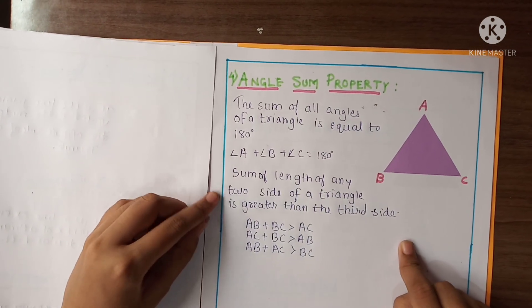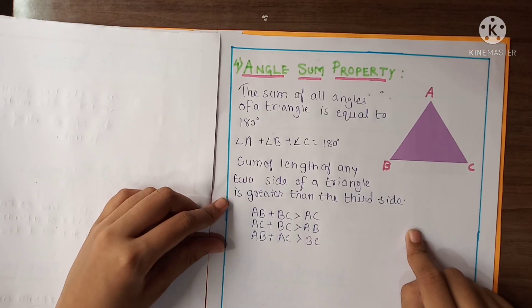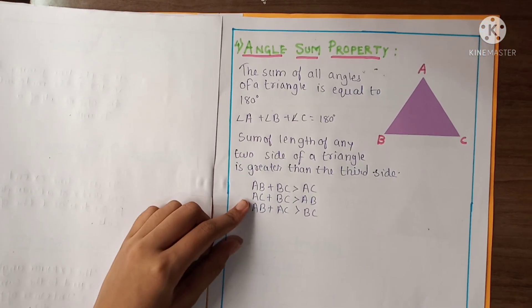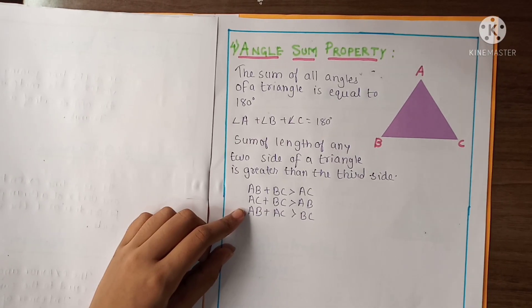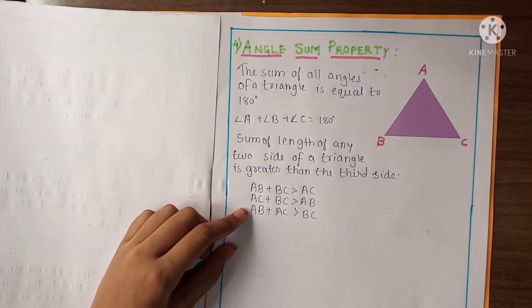Sum of length of any two sides of a triangle is greater than the third side. AB plus BC is greater than AC. AC plus BC is greater than AB. And AB plus AC is greater than BC.